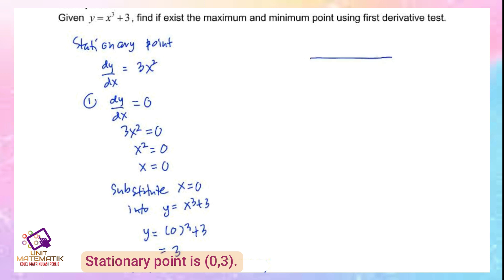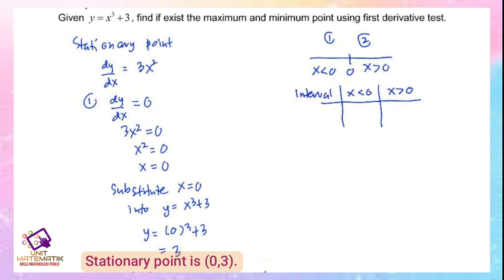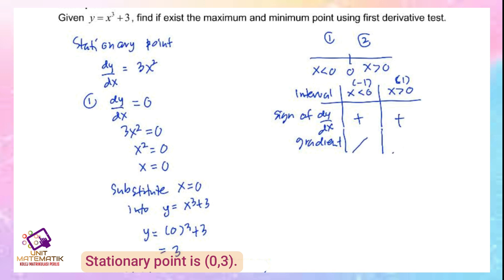The critical value is x equals 0, giving two intervals: x less than 0 and x greater than 0. Choose test values: negative 1 for x less than 0, and 1 for x greater than 0. Substituting into dy/dx equals 3x squared: both negative 1 and 1 give a positive sign. So the gradient is increasing on both sides.